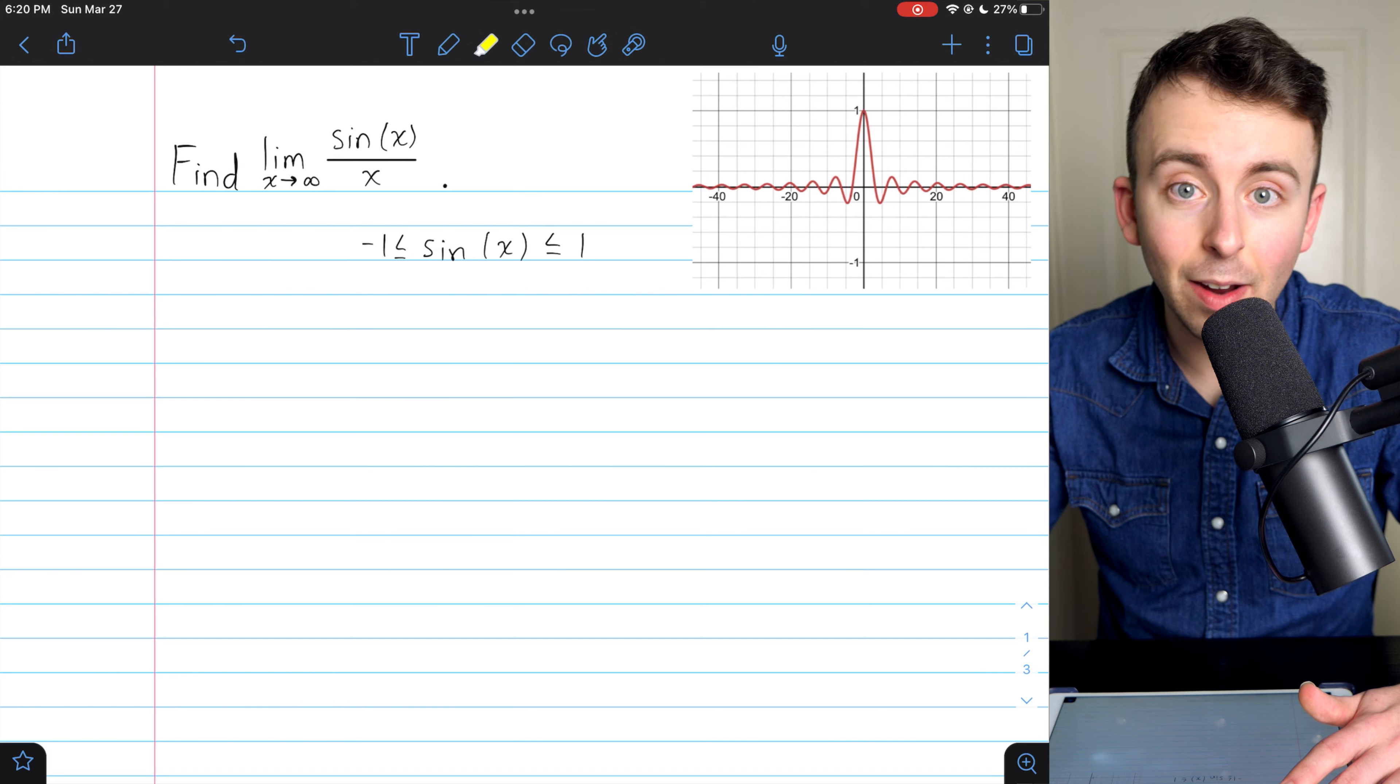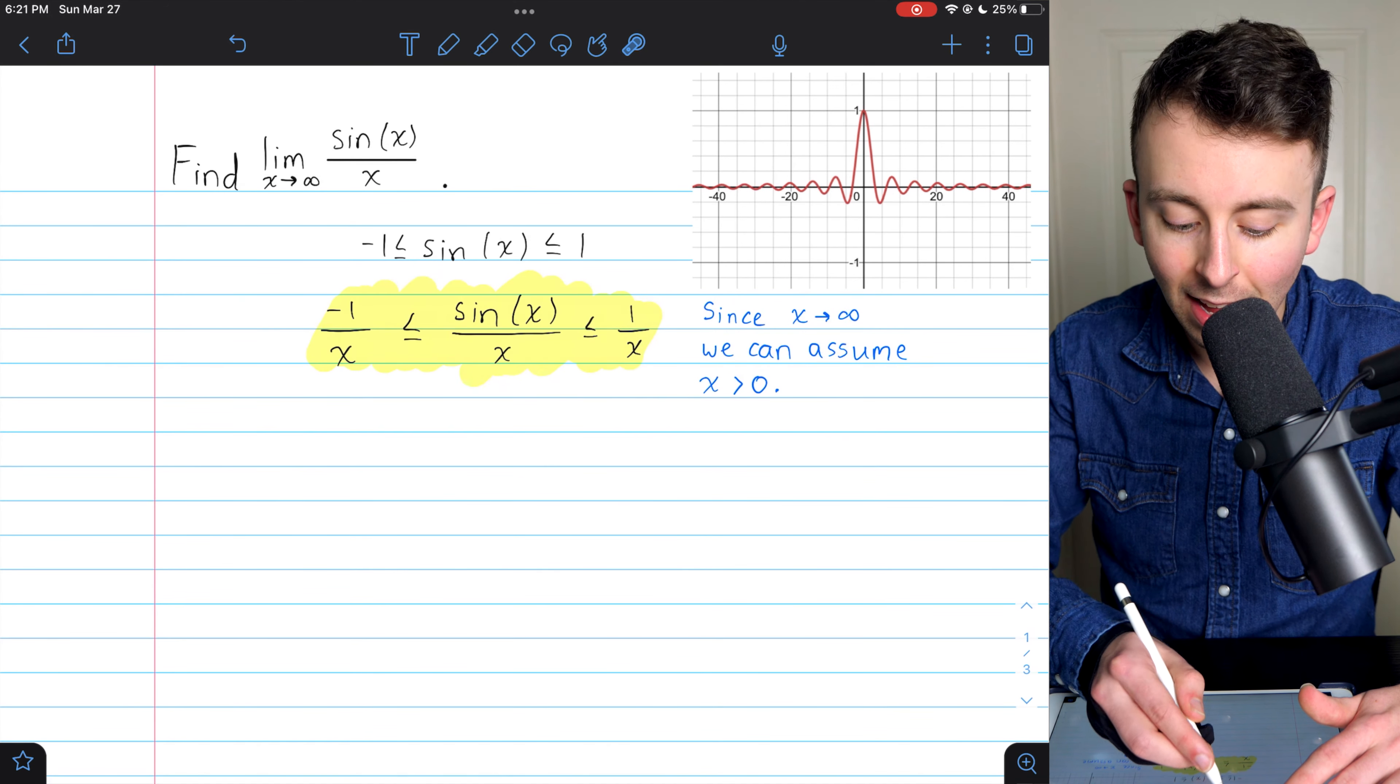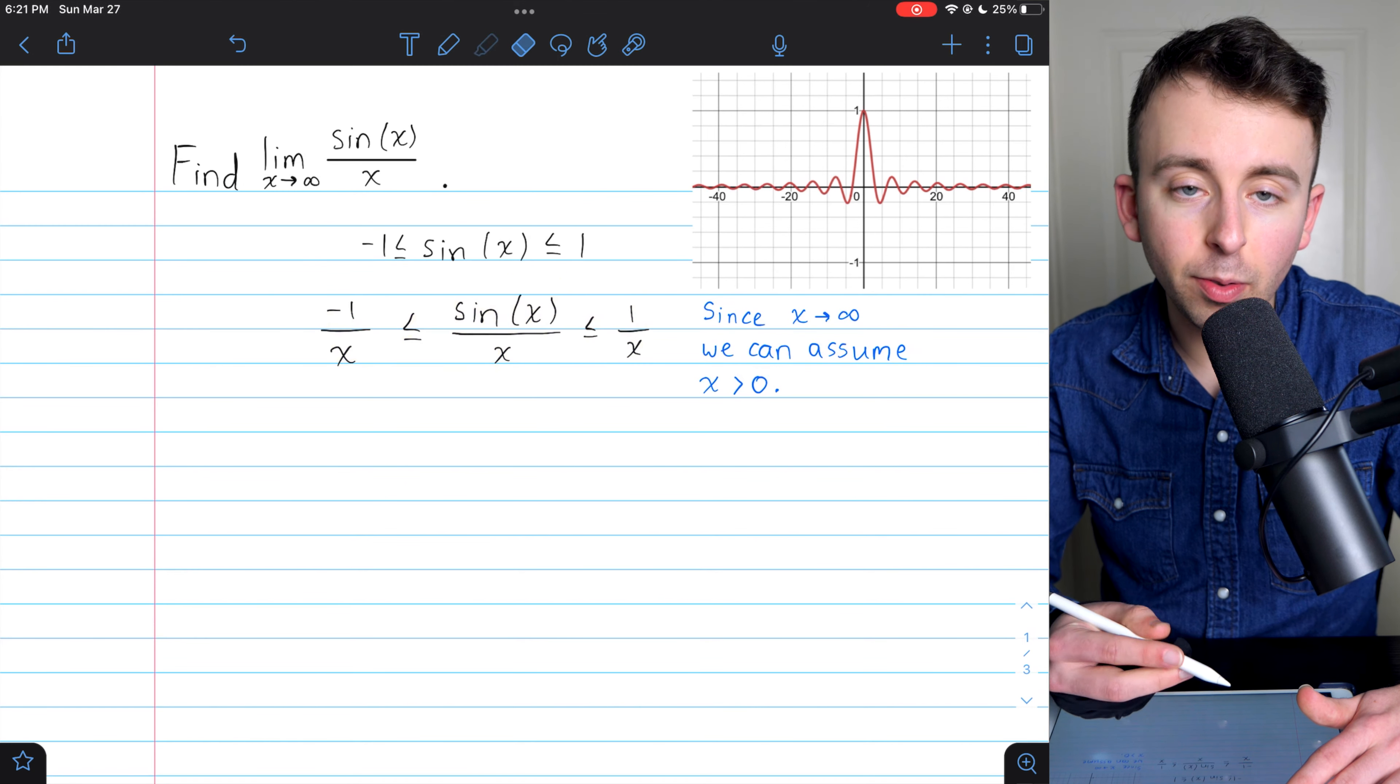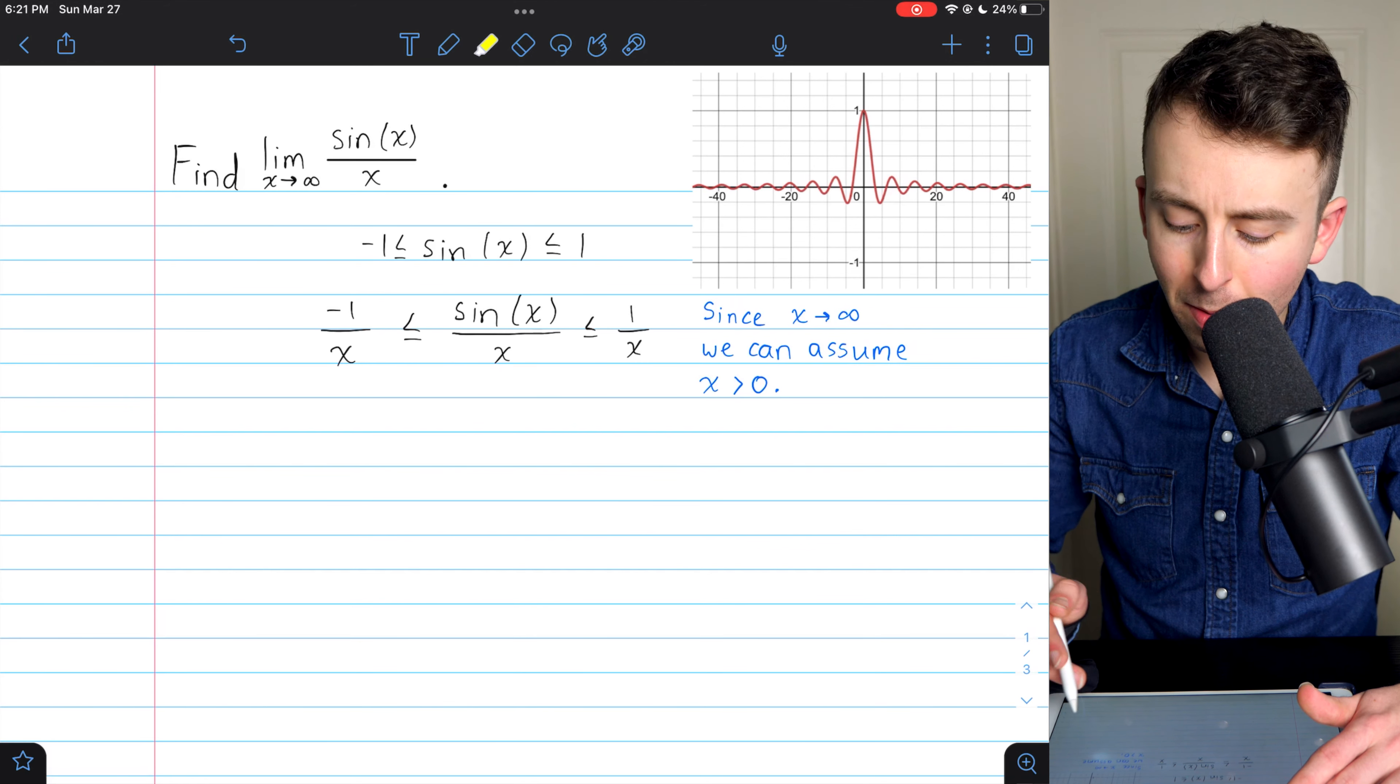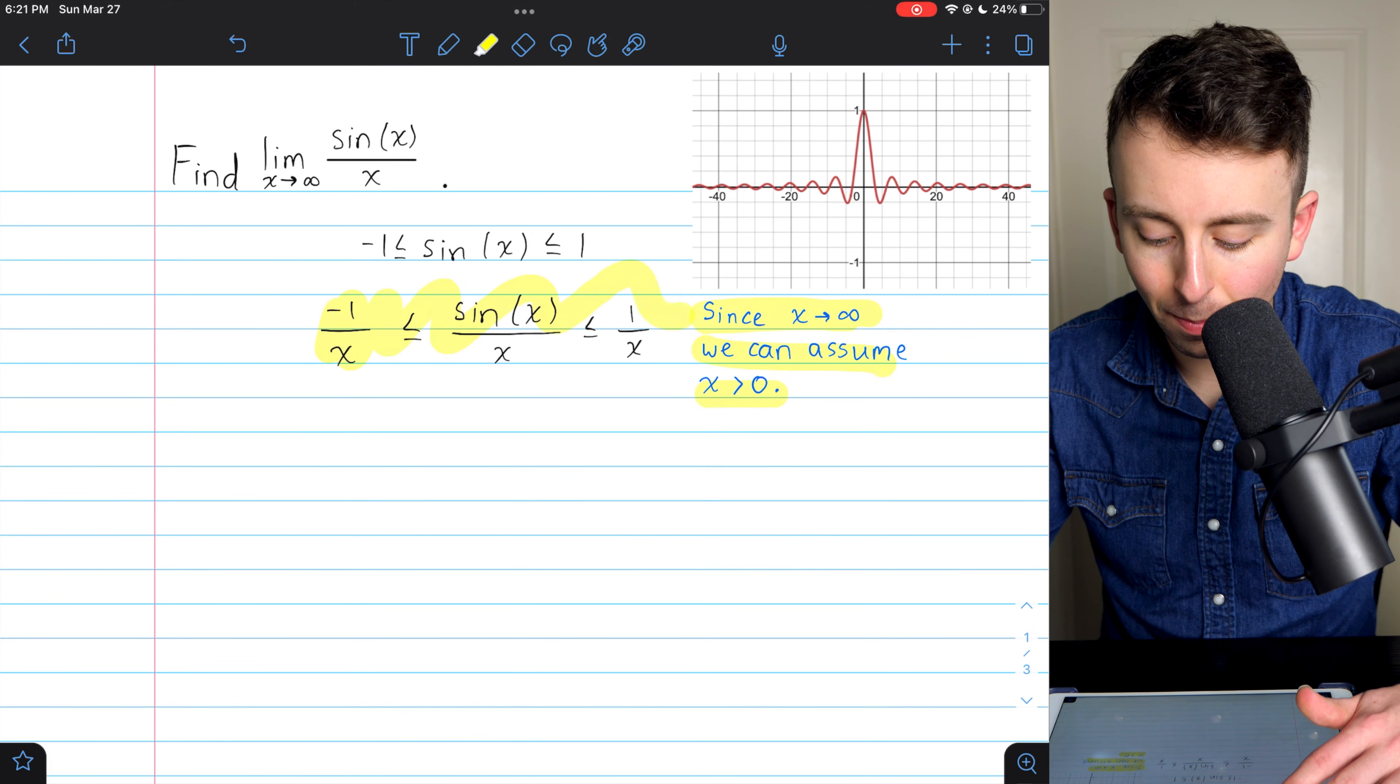All we've got to do is divide everything by x. Dividing everything by x leaves us here. Negative 1 divided by x is less than or equal to sine of x divided by x, that's the function we're interested in, is less than or equal to 1 divided by x. And you may wonder if we run into any problems because maybe x is negative, so maybe we'd have to reverse the inequality. But we don't have to worry about that. Since x is approaching positive infinity, we can assume x is positive. And so there aren't any complications with dividing everything by x.